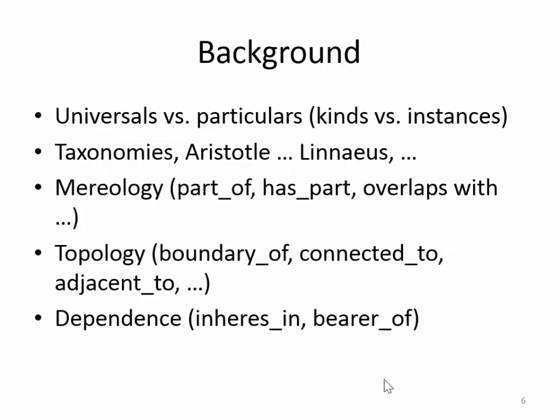BFO has a certain philosophical background. That background starts with the distinction between universals and particulars, also describable using the terms kind and instance. A universal is a general category — something like mouse, human being, table, or planet. A particular is an instance of a general category: this particular mouse, that particular human being, or these particular planets which make up the solar system.